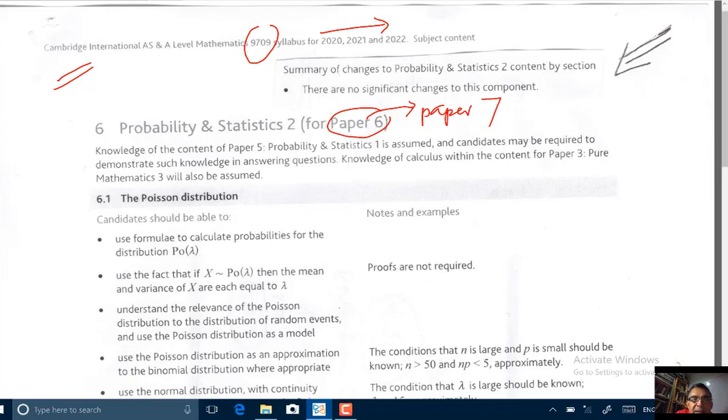So that's why the CIE has given you a line here from the syllabus: Summary of changes to Probability and Statistics 2 content by section. There are no significant changes to this component. Again, so that there's no misunderstanding here.